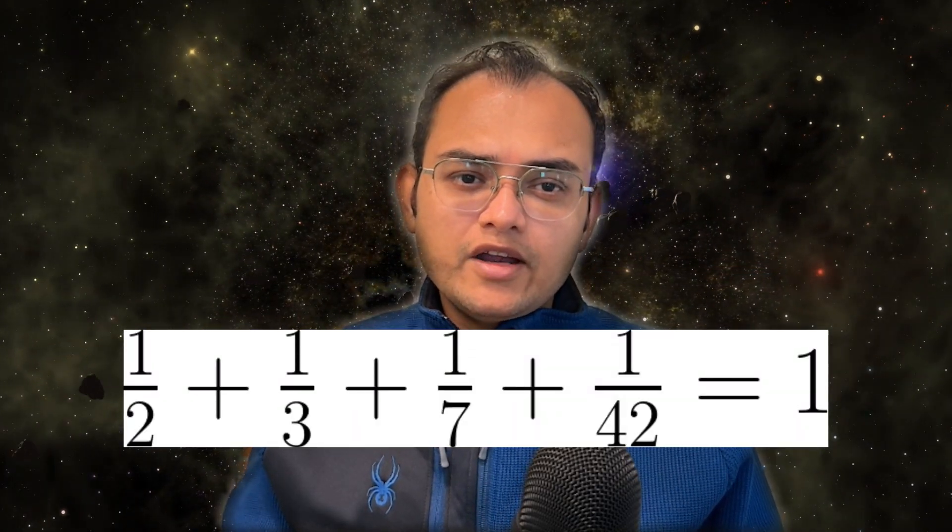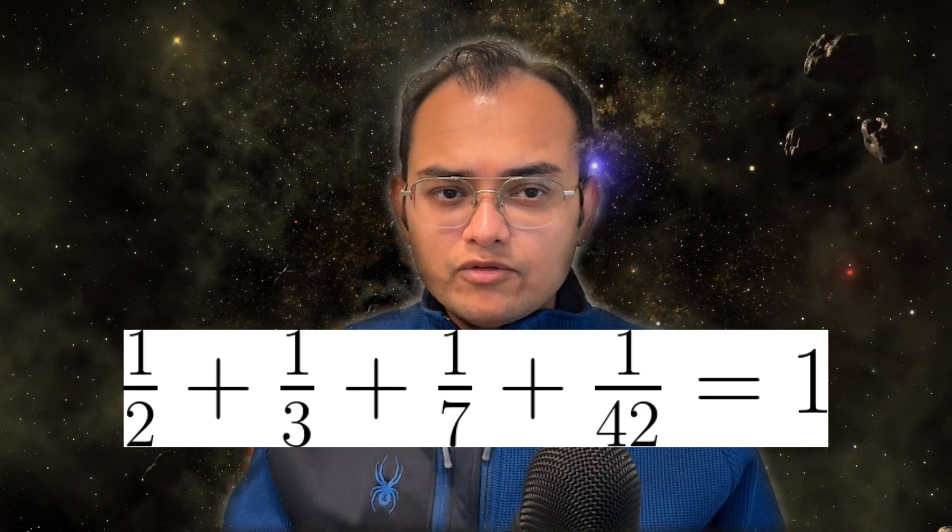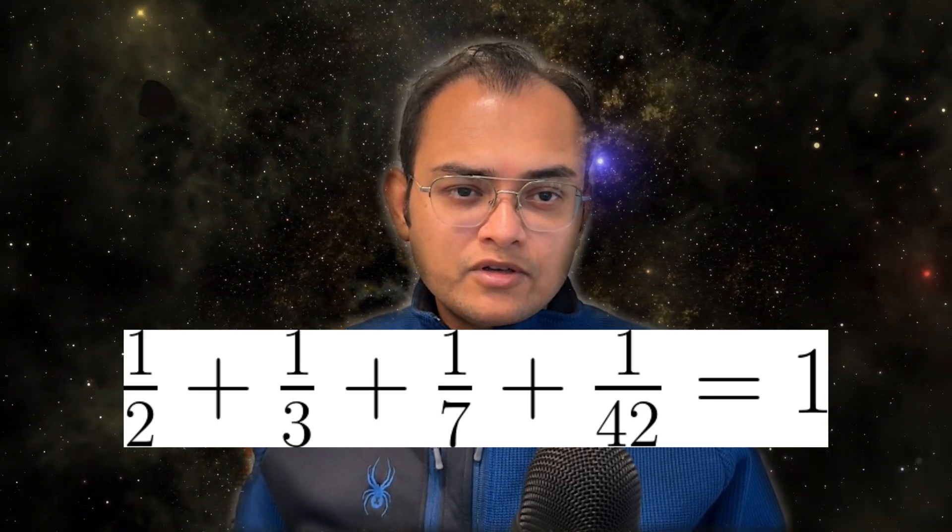If you let a equals 2, b equals 3, c equals 7 and d equals 42, then you get a solution. Moreover, these 4 numbers are related by another property: they all are factors of 42.